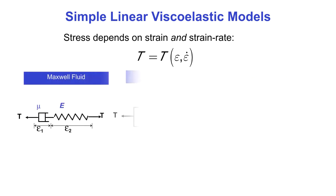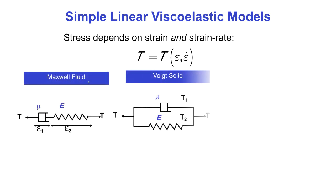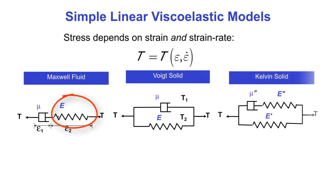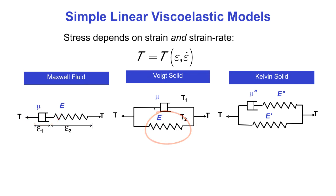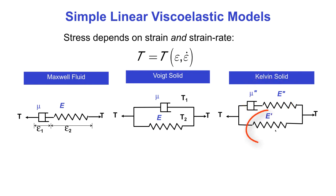Examples of models like this are the Maxwell fluid model, modeled as an elastic spring in series with a viscous dashpot; a Voigt solid model, modeled as an elastic spring in parallel with a viscous dashpot; and a Kelvin solid model, modeled as a Maxwell fluid in parallel with an elastic spring.